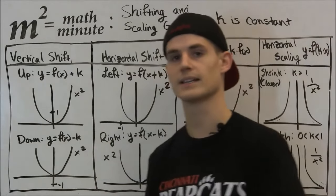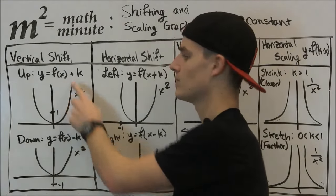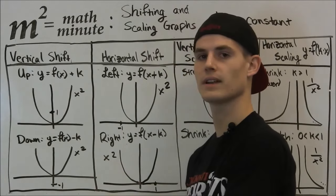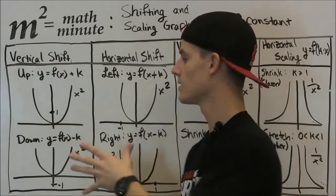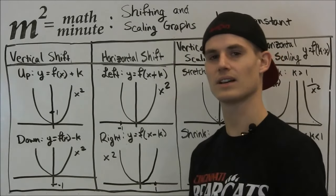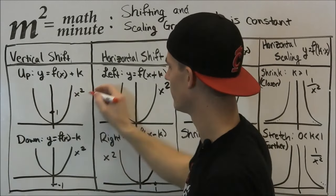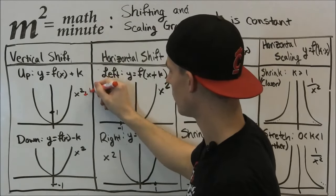So the first idea is a vertical shift. If we have a function and we add some value k to it, we're going to shift it up that number of units. So as you see with all these, I have x squared drawn. That's the easiest graph to understand. So what we're going to do is if we were to say x squared plus 1...